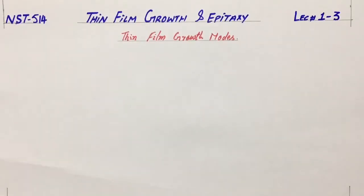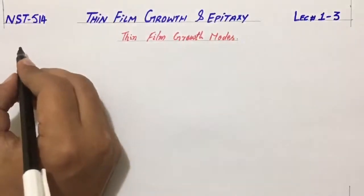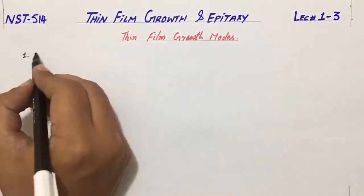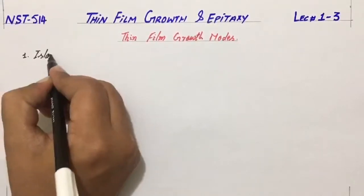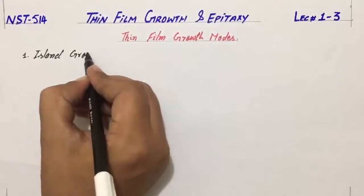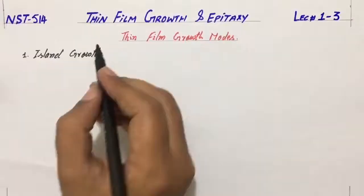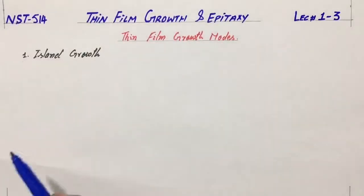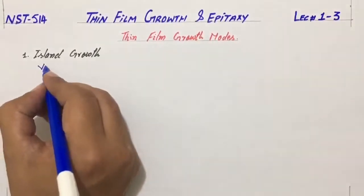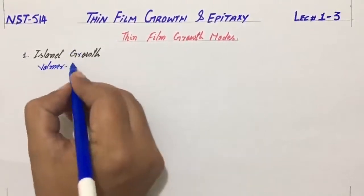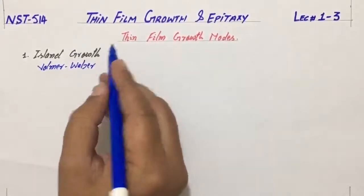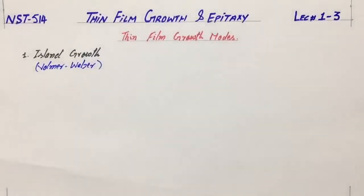The first growth mechanism is island growth. This island growth is also called the Volmer-Weber growth mode. In this type of growth mode, the film atoms are more strongly bound to each other rather than to the substrate surface.